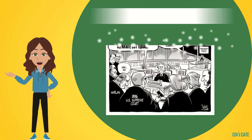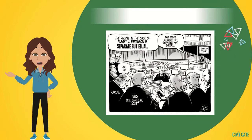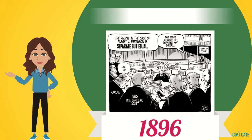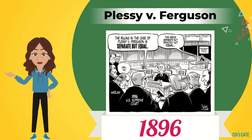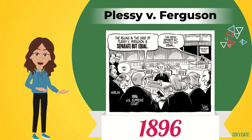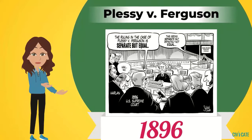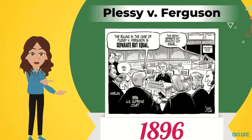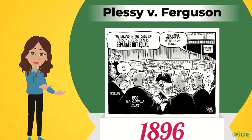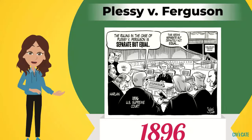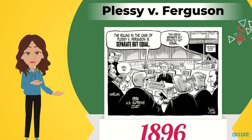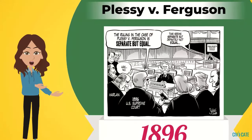But not all laws and decisions advanced the cause of civil rights. In 1896, the Supreme Court's Plessy v. Ferguson decision allowed for racial discrimination by permitting separate but equal public facilities, including schools. But of course, the facilities were not equal. It was a step backwards because it encouraged segregation and discrimination.